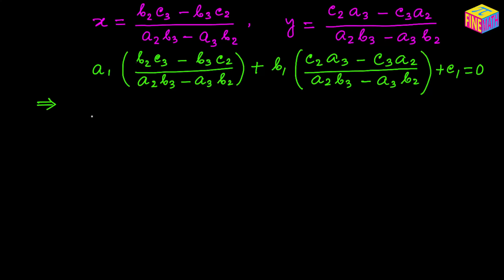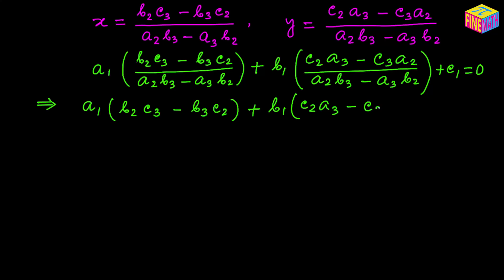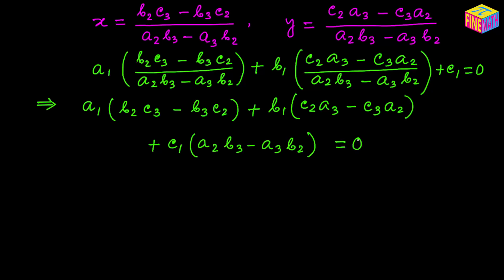On the left-hand side we are left with just the numerators, so it would be: a₁ times (b₂c₃ minus b₃c₂), plus b₁ times (c₂a₃ minus c₃a₂), plus c₁ times (a₂b₃ minus a₃b₂), and all of this equals 0. That is the necessary condition telling us that these three lines are concurrent if this quantity equals 0.